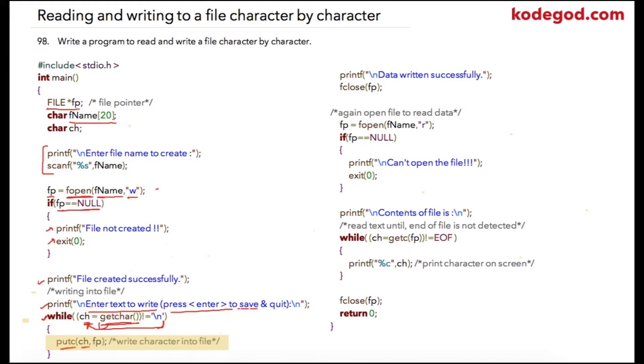As soon as user enters slash n that will be received by getchar and it will be stored into ch and if user has entered the newline character that is slash n so this condition will be false and this while loop will be terminated.